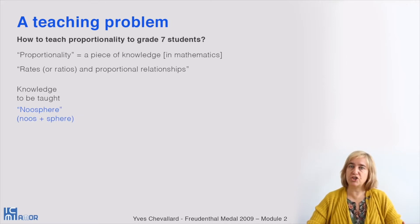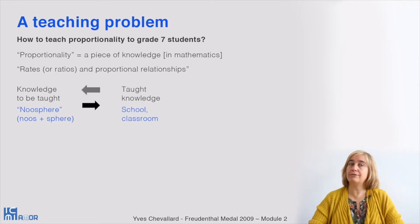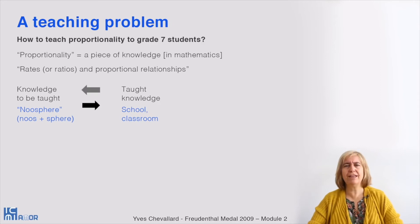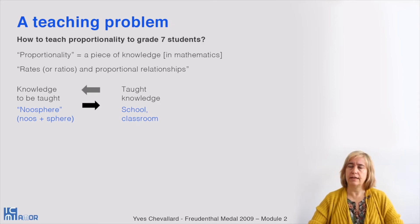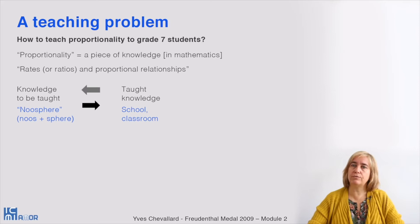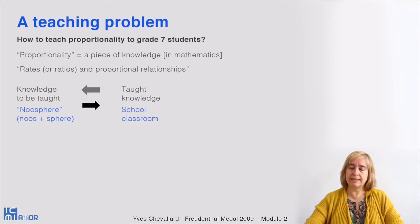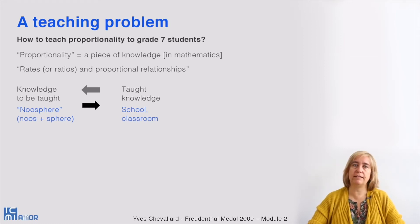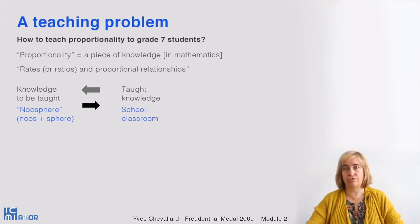For the moment, it's just a project, something to be done. When this piece of knowledge is actually taught, we will talk about taught knowledge. Knowledge to be taught and taught knowledge — why use this distinction? Because there is no one-to-one correspondence between them. From the same curriculum proposal or description — the same knowledge to be taught — we can obtain different activities implemented in the classroom, different pieces of taught knowledge.